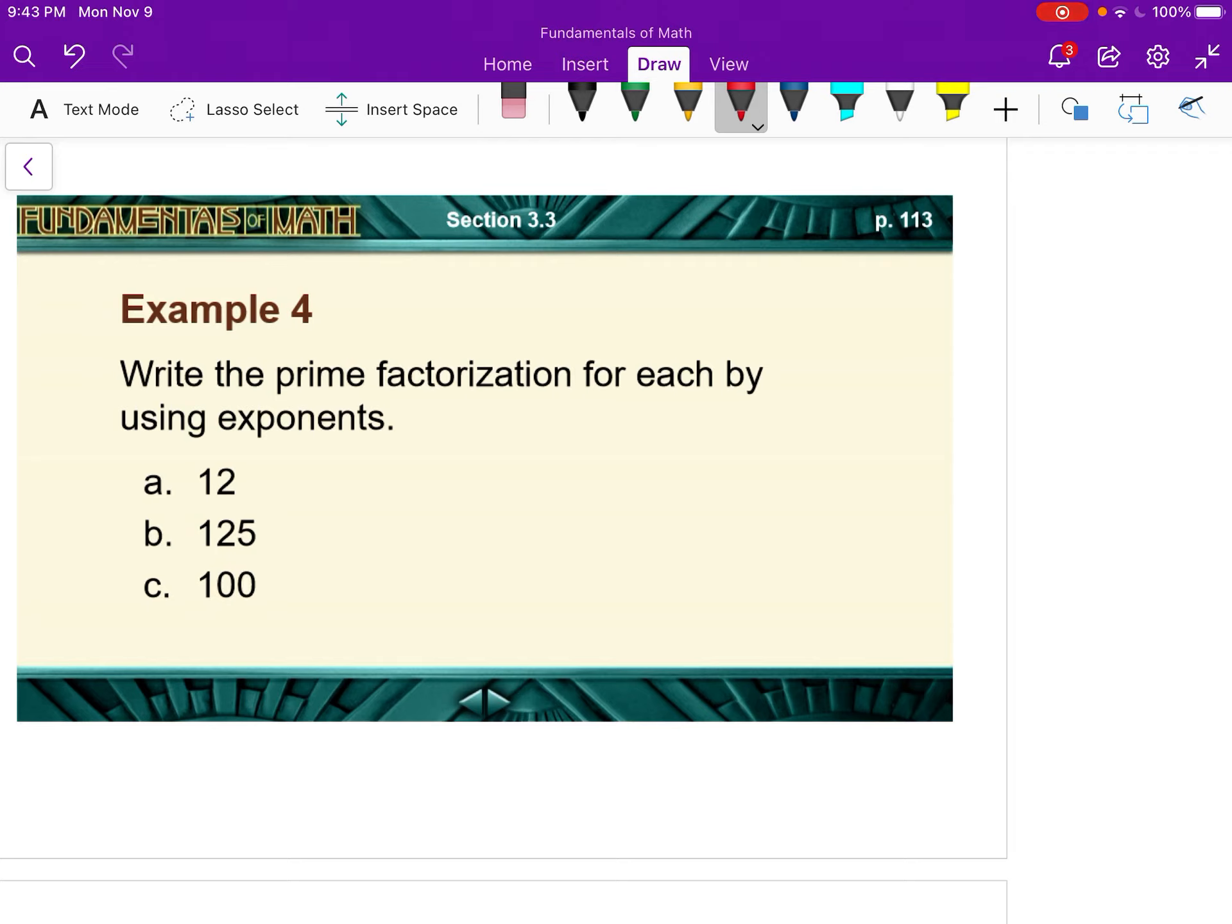So write the prime factorization for each by using exponents. I'm going to do a factor tree. 12. There's a few different ways to get there. We can do 6 times 4, I mean 6 times 2, or 3 times 4. So we have 6 times 2. 6 is 2 times 3, and 2 is prime. So you don't have to do anything else with that. You can't factor any further. When you get to the end of a branch, you have to circle it.